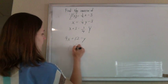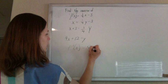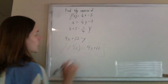This is your inverse function. If you want to put it back in the fancy notation, we're going to say f inverse of x equals 4x plus 12. And that's your answer.